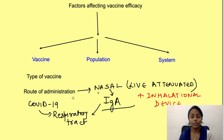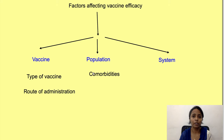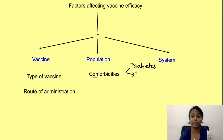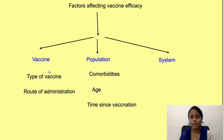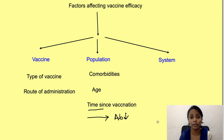Apart from vaccine-related factors, there are host factors related to the population. First, the presence of co-morbidities — as seen with COVID, conditions like diabetes or hypertension may reduce vaccine efficacy. Secondly, the age of the person matters, as the vaccine may have different efficacy in different age groups. The time since vaccination is also important — as time passes, antibodies decrease in the blood and vaccine efficacy decreases, which is why booster doses may be required.